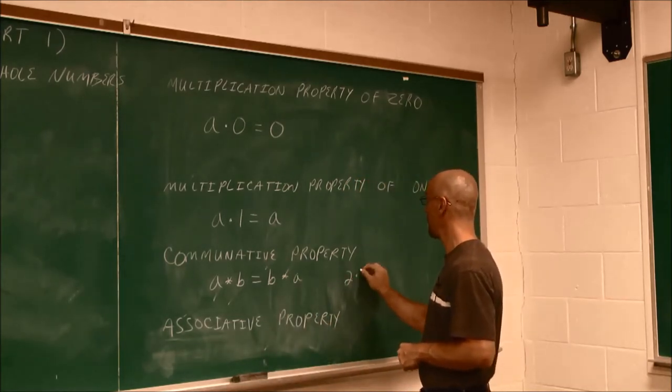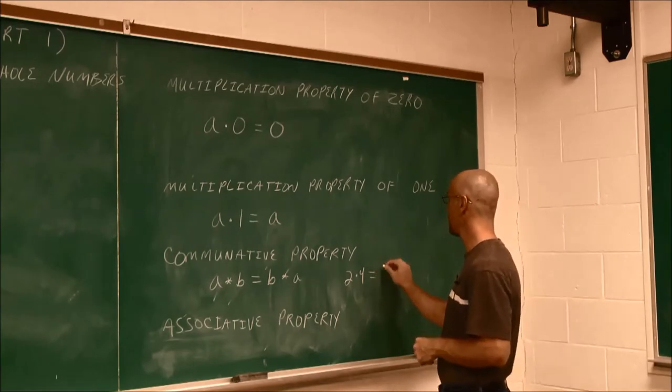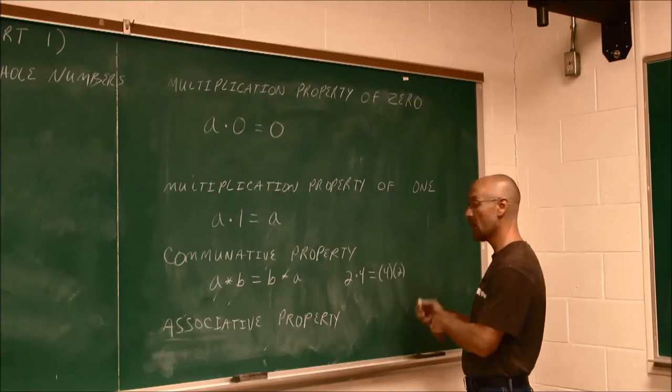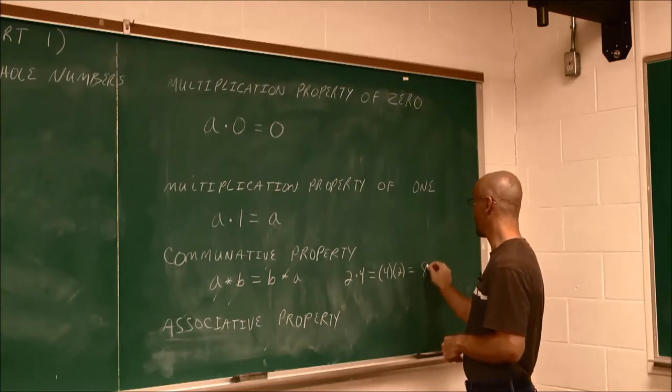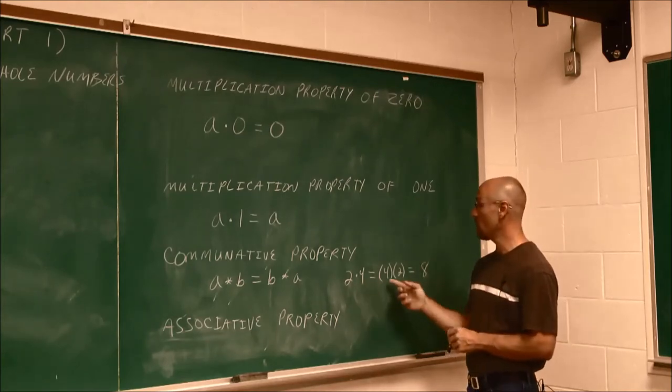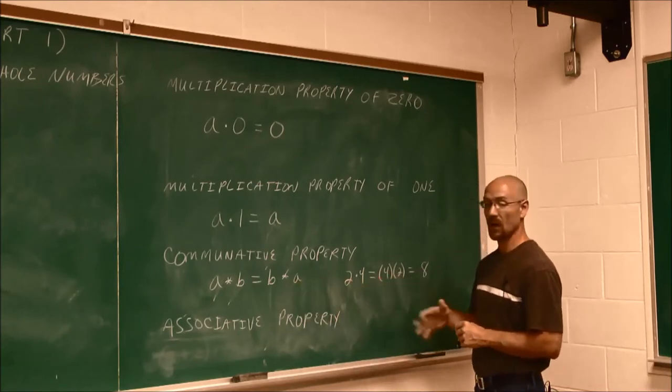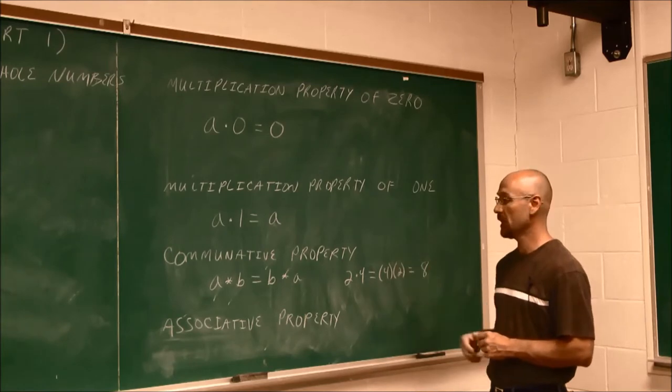Let's look at an example. We've already seen 2 times 4, which equals 8. Well, that's the same as 4 twice or 4 times 2. Both of them would give you 8. 2 times 4 or 4 times 2, the order doesn't matter. And we have to watch what symbols we're using to indicate multiplication.